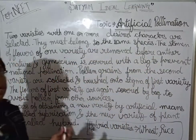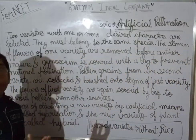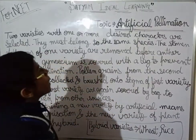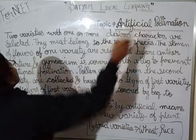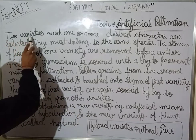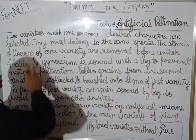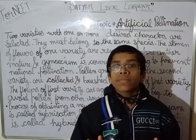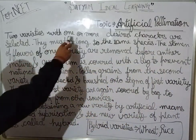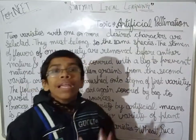Now we will discuss how artificial pollination occurs. Two varieties of plant are selected, and we have to make sure they have one or more desired characters that we want. They should have one or more desired characters.